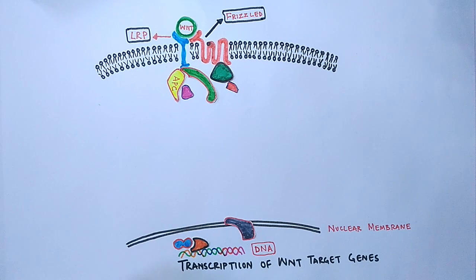So this is how the WNT signal plays a role in the activation and deactivation of WNT genes by regulating the degradation of beta-catenin molecule. This is all about WNT signaling pathway.